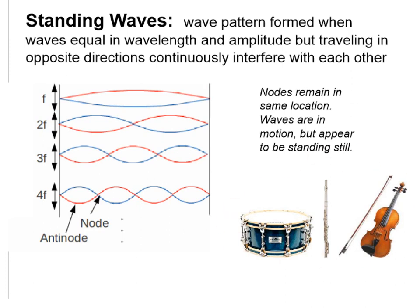Musical instruments form standing waves in different ways. A violin produces standing waves on strings, a flute produces standing waves in a column of air, and a drum also produces a special kind of standing wave due to the stretched material across it.